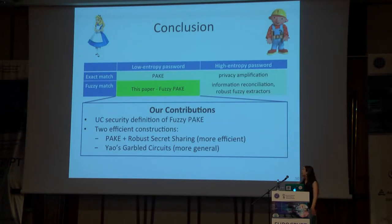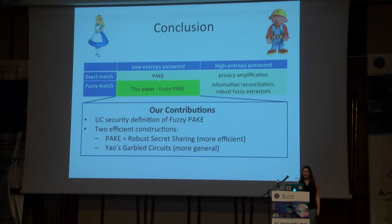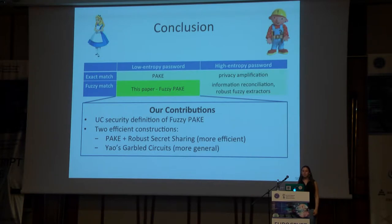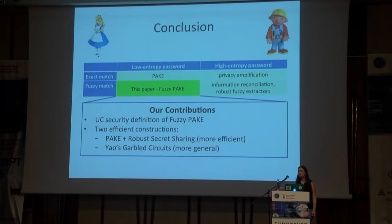In conclusion, there's been a lot of work on key exchange based on imperfect secrets. We're the first to look at the low-entropy fuzzy match setting, and we give UC security definitions for this new primitive called Fuzzy PAKE, and two different constructions on different points on the efficiency-generality curve, which are probably useful in slightly different scenarios. Thanks everyone for listening.